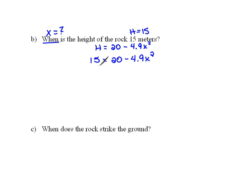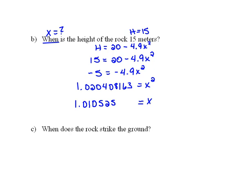So I need to subtract my 20 from both sides first to get negative 5 equals negative 4.9x squared. And then if we divide both sides by negative 4.9, we get a big number. We get 1.020408163 equals x squared. So you may have to pause it, so you can do that on your calculator. And then when we take the square root of both sides to get the x alone, we get x equals 1.01052545.